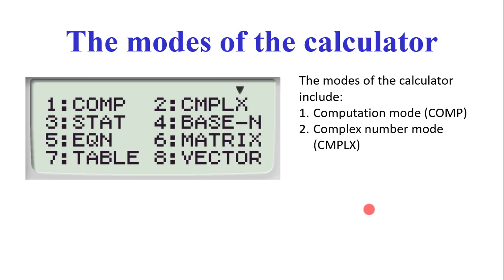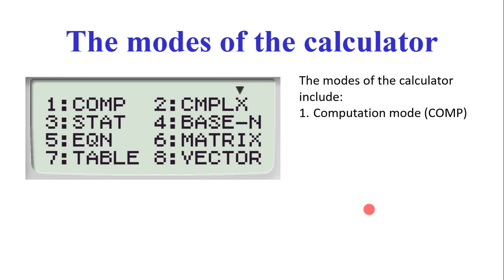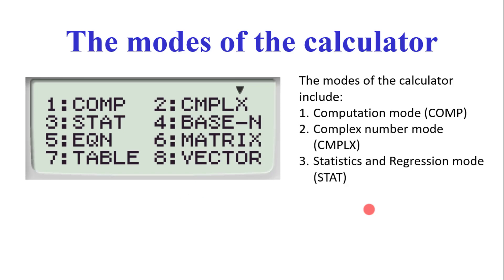The complex number mode enables your calculator to compute values and give answers in imaginary numbers as and when they appear. At a senior high school level this particular mode is not very relevant — it is mostly relevant at tertiary institutions.